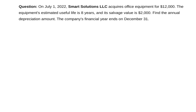In this video we are focusing on depreciation using the straight-line method. Question one: on July 1st, 2022, Smart Solutions LLC acquires office equipment for $12,000. The equipment's estimated useful life is eight years and its salvage value is $2,000. Find the annual depreciation amount for this year only. The company's financial year ends on the 31st of December — this is very important information.